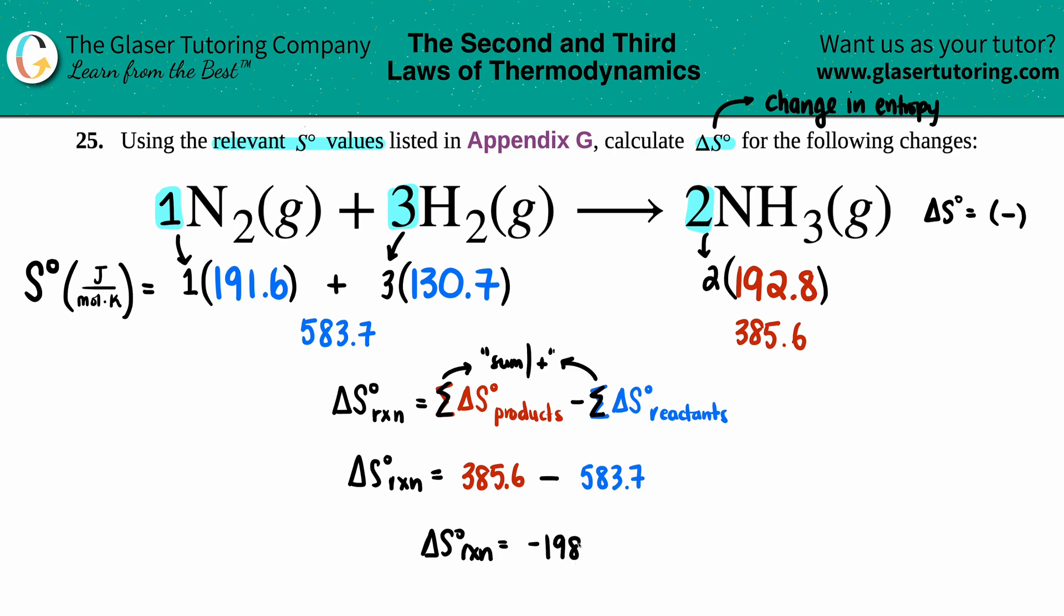And the units are your S units, right, for entropy: joules per mole times Kelvin. Doesn't matter which way you write it, they're both fine. And that's the final answer. So we're losing entropy as we're making the products. It makes sense because we have now less moles of gas, and that's it.